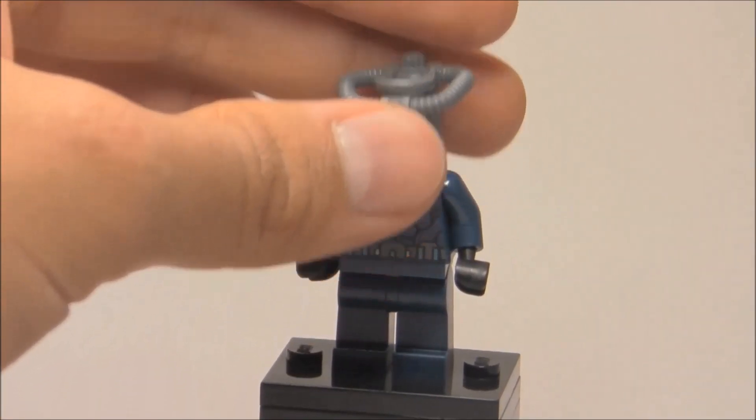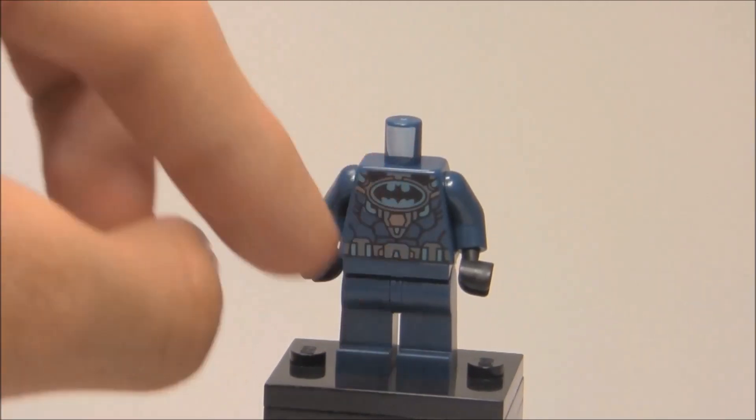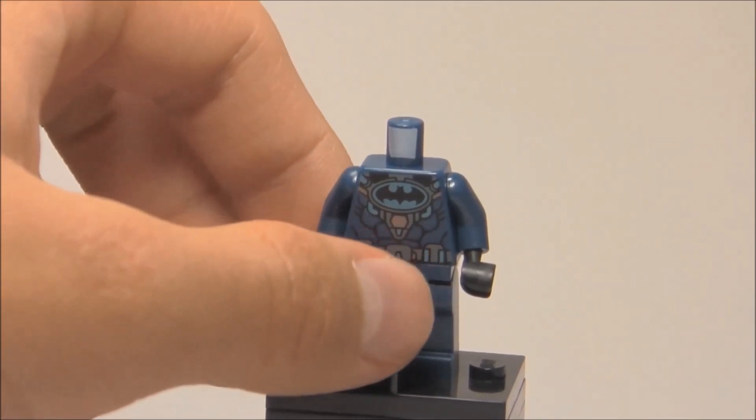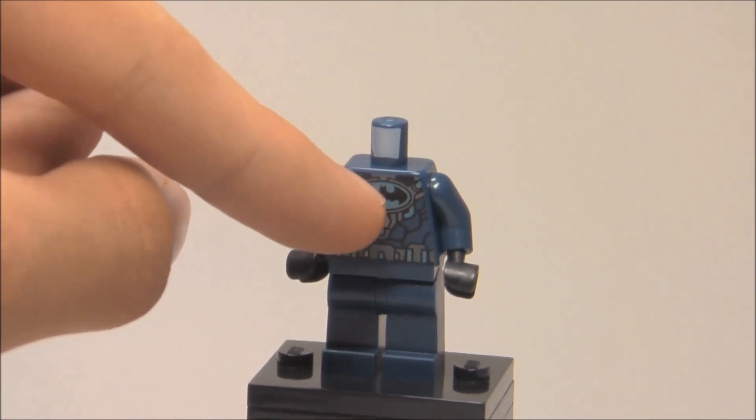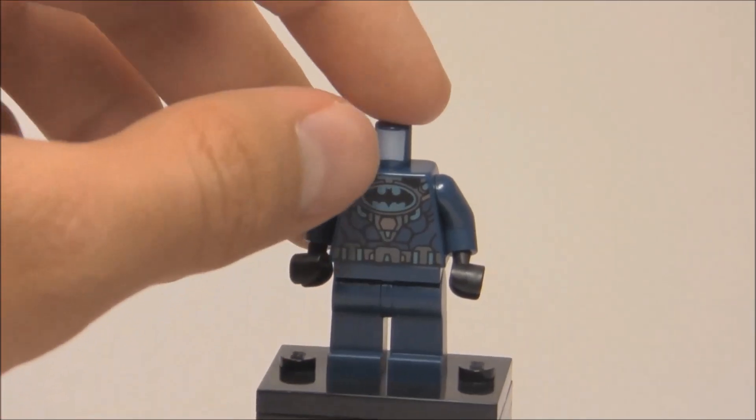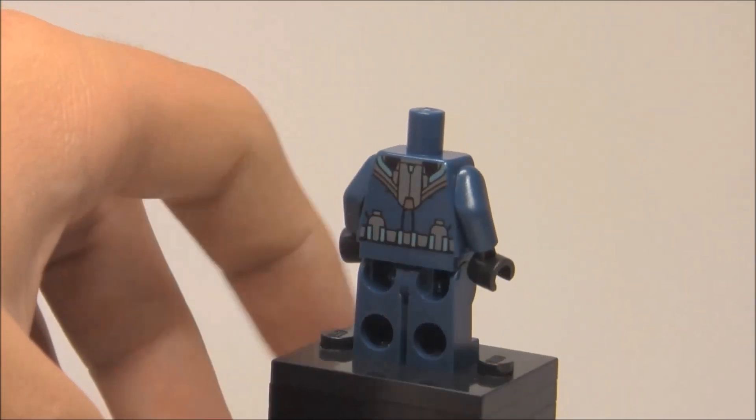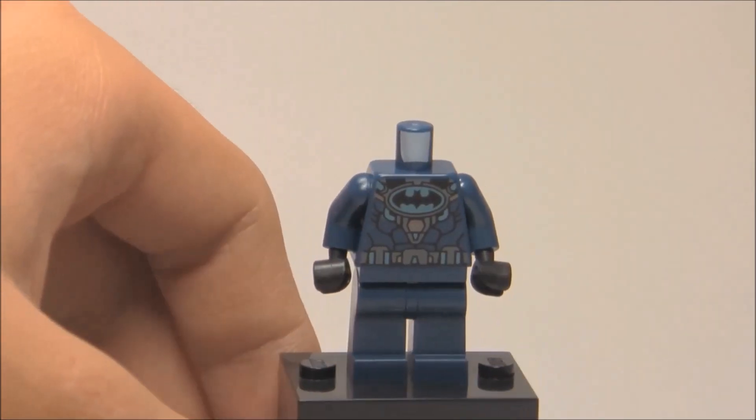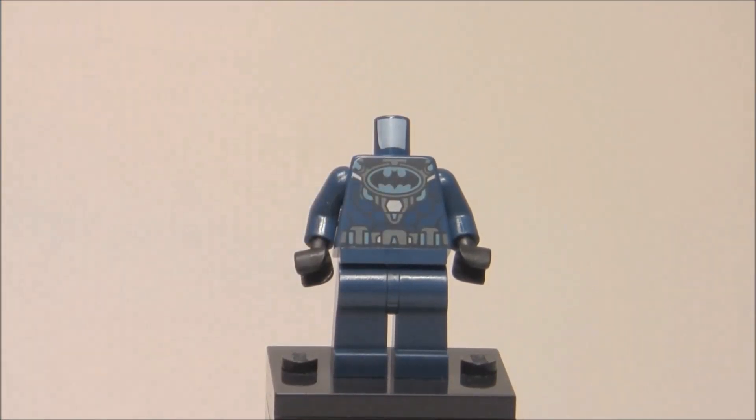He comes with this little piece which is his scuba breathing gear. The torso printing is excellent. It's really detailed with muscle tones on his torso, his logo over a teal circle, and a utility belt. Very nice back printing. The only thing is he does not have any leg printing, which is a little disappointing, but I don't mind that too much.